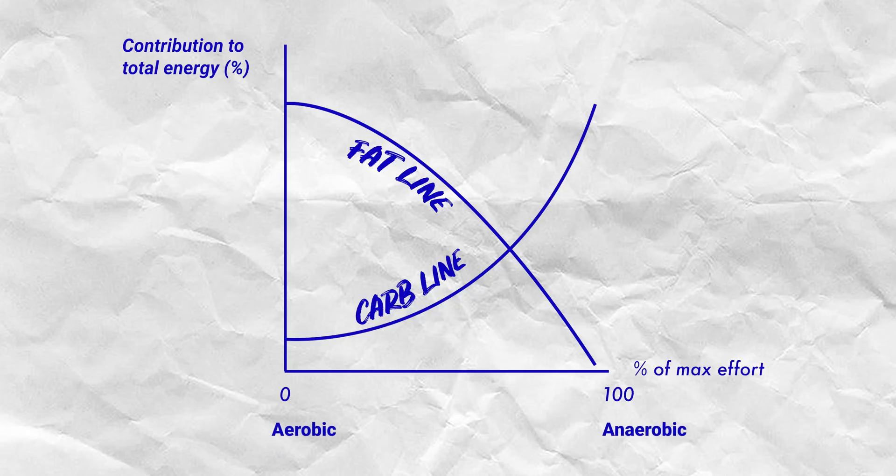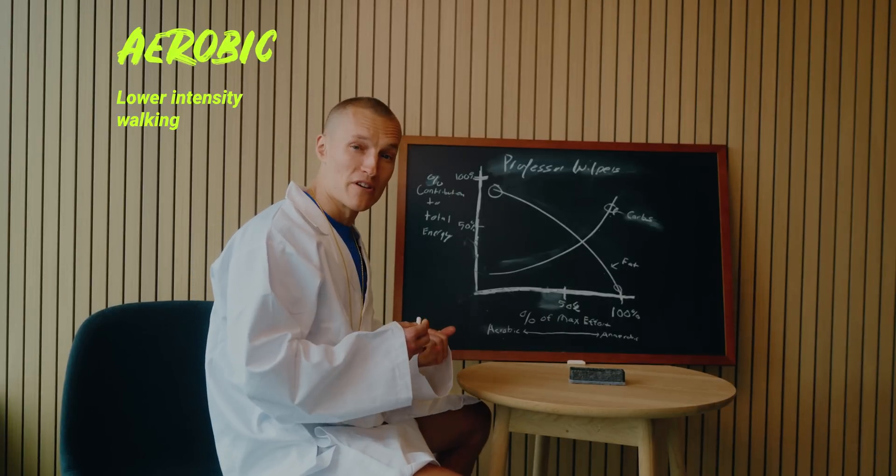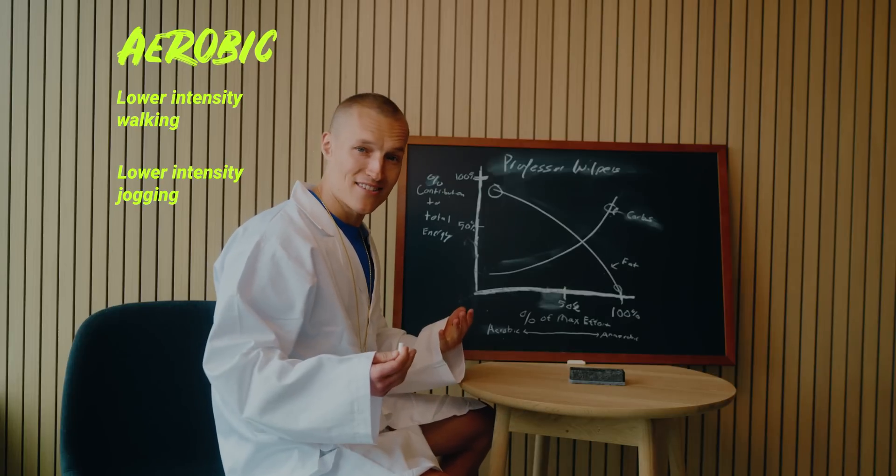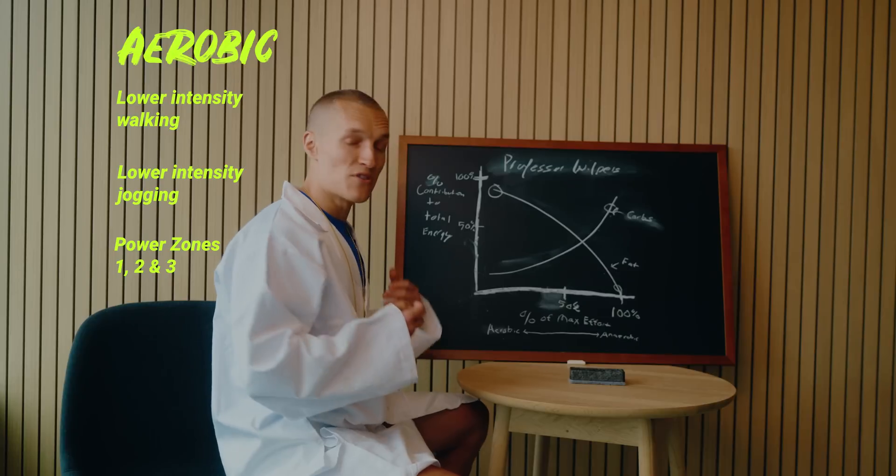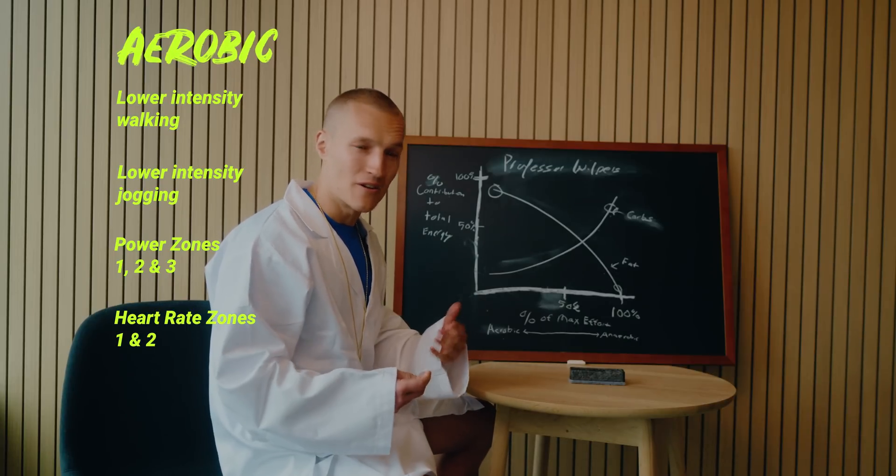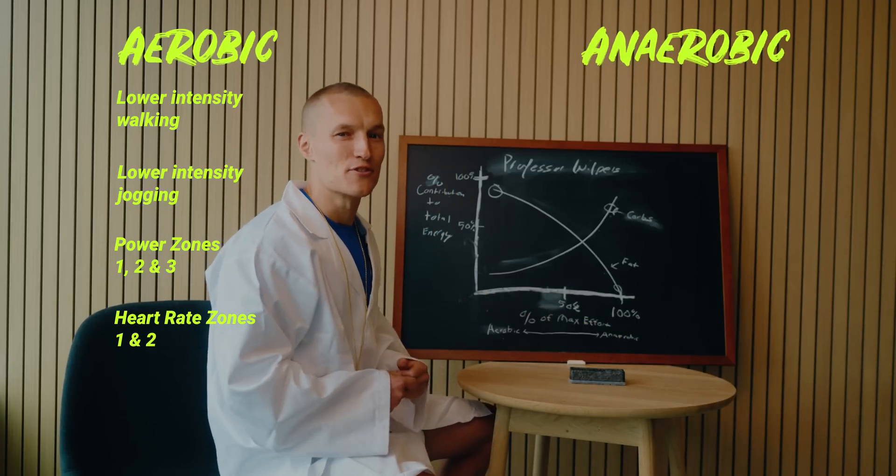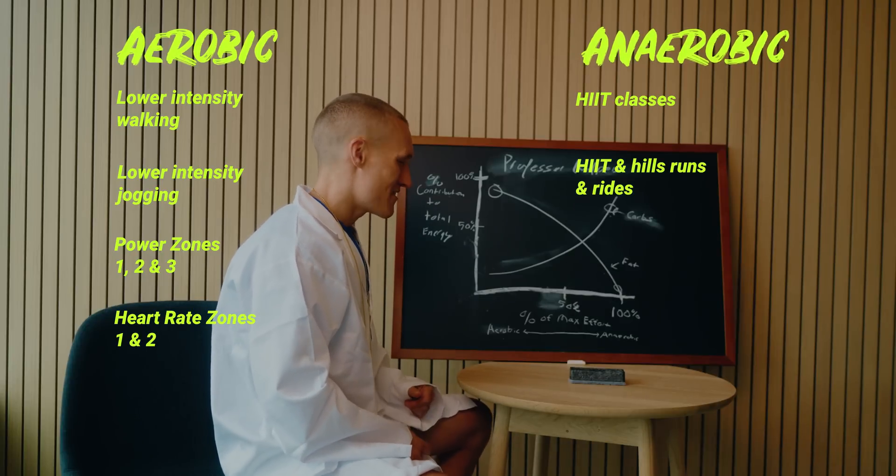As a percent of max effort, obviously you're closer to zero, you're more aerobic. And as you get more towards 100% max effort, you're more anaerobic. So when we think of aerobic, what are some forms of aerobic activity? Say, for example, lower intensity walking, lower intensity jogging. And if you're in my power zone classes, think zones one, two, three. If you're used to heart rate zones, it's like zones one and two. Anaerobic is where we think about our high intensity interval training, like our HIIT classes, our Hittin' Hills runs and rides, very high intensity type training sessions.